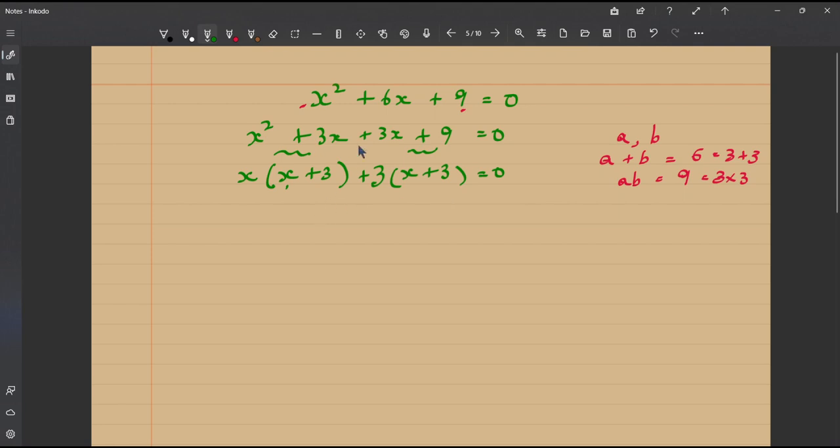So, now we have found the factors of x squared plus 6x plus 9. It is x plus 3 multiplied by x plus 3. It is nothing but x plus 3 the whole squared. So, we ultimately find that x squared plus 6x plus 9 is a perfect square.